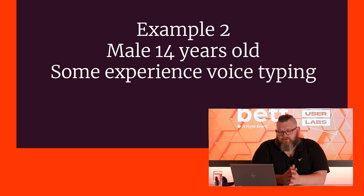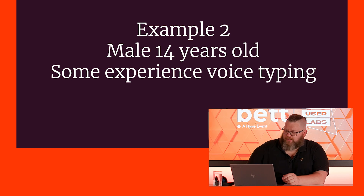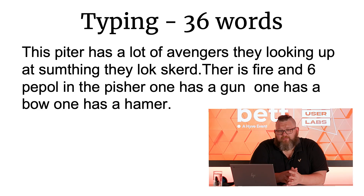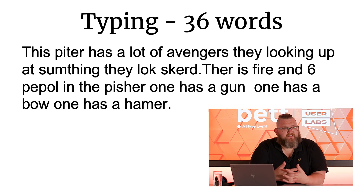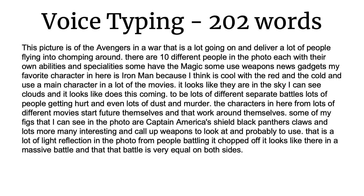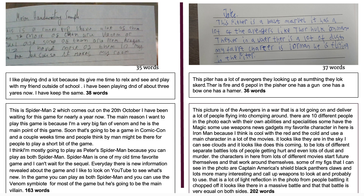The next student is a 14-year-old male who had some experience with voice typing but not much. His handwriting sample showed lots of spelling mistakes and not much grammar. His typing was 36 words — again, spelling mistakes and a little punctuation. His voice typing produced 202 words, with full stops and some capital letters. The amount he could produce really enabled him to engage, and you can clearly see the difference between the early handwriting and typing samples compared to the voice typing.